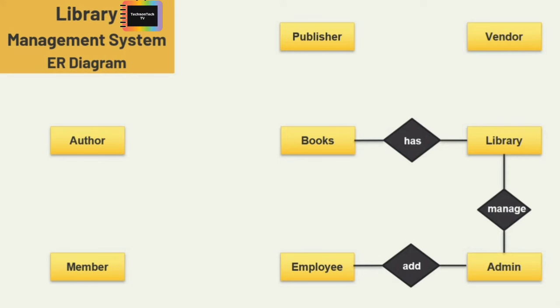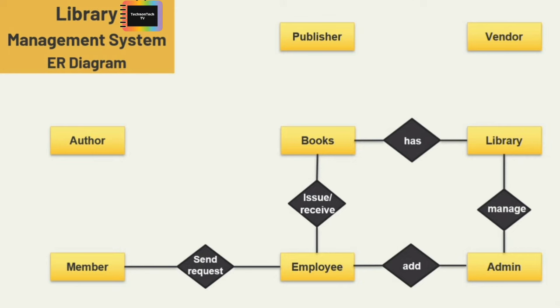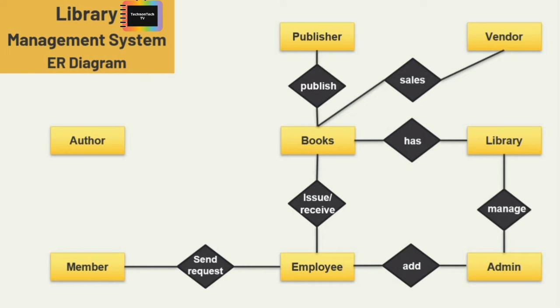Next is the entity employee and member. Members send requests for books to employees, so I am adding the relation 'send request' here. Employee issues and receives books, so I am adding the relations 'issue' and 'receive' between employee and books. Next is the entity vendor and books — vendor sells books, so I am adding a 'sales' relationship here.